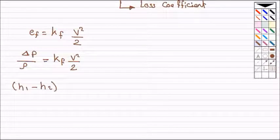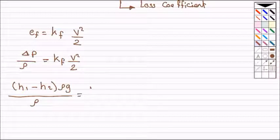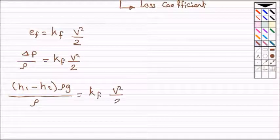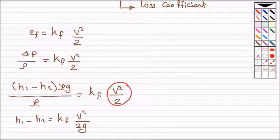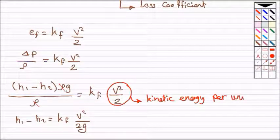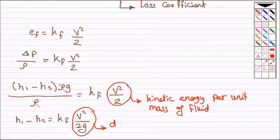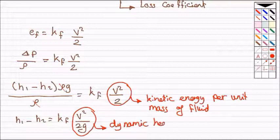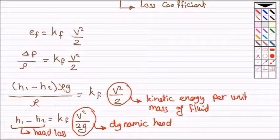So we can represent delta p in terms of head loss. Density rho will be cancelled and we can move acceleration g to the other side of the equation. So now v squared by 2 is the kinetic energy per unit mass of fluid, and v squared by 2g is the dynamic head of the fluid. hf is the head loss.